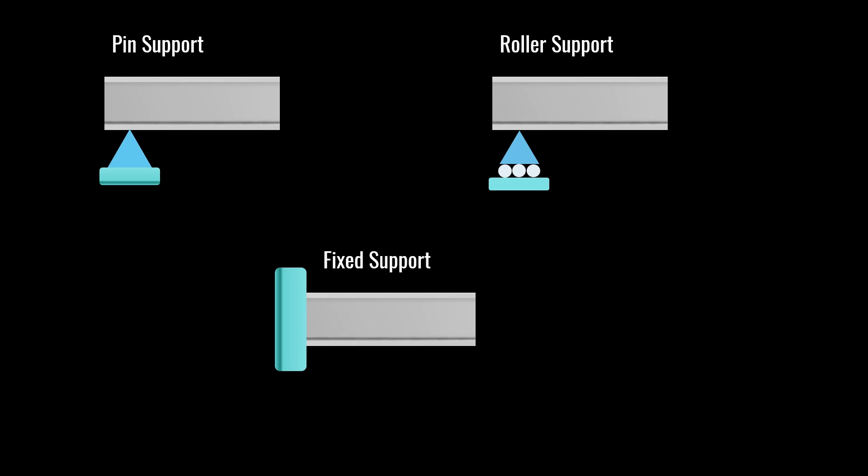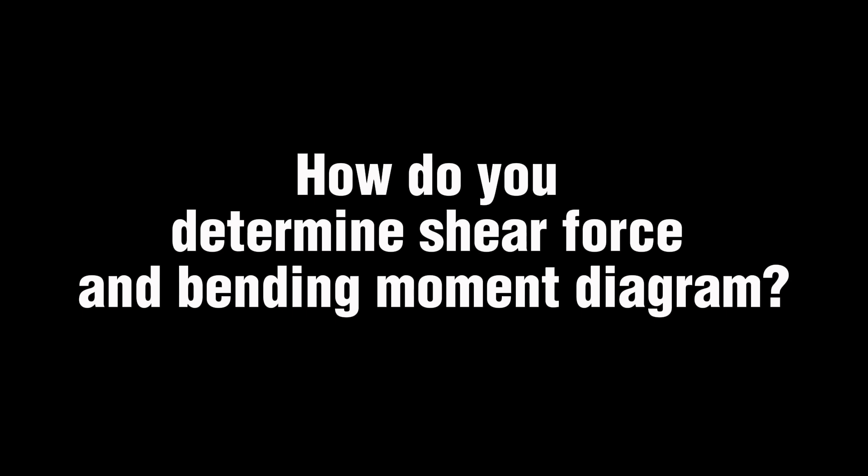All structures must be supported on the ground. There are three most common supports in structural analysis: first is the hinge, pin, or simple support; second is the roller support; third is the fully fixed, rigid, clamped, or encastre support. If a degree of freedom is restrained at a support, a corresponding reaction develops. Simple supports permit rotation so there is no resisting moment, but prevent both horizontal and vertical translation. Roller supports only prevent vertical displacement. Fully fixed supports prevent all displacements, providing horizontal and vertical reaction forces plus a reaction moment.